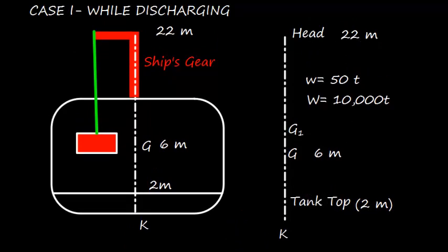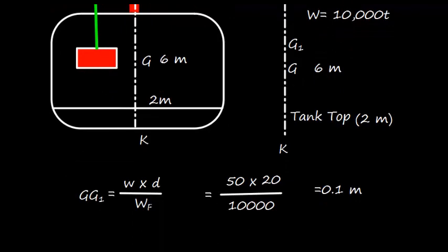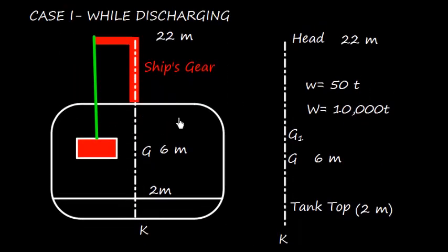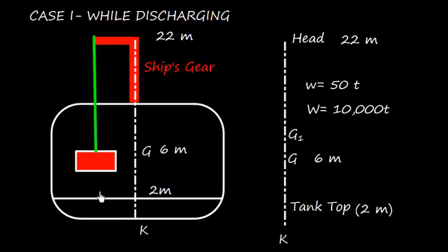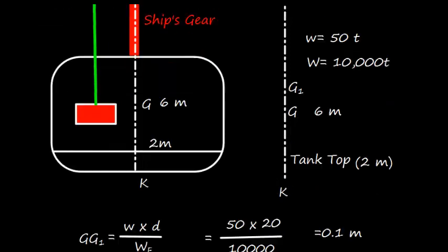So distance shift is 20, and WF is the final weight, which is the same. It's not going to change because the weight is still on board ship. You can visualize here, weight is still on board ship. However, instead of acting at tank top, now weight is acting at the derrick head.